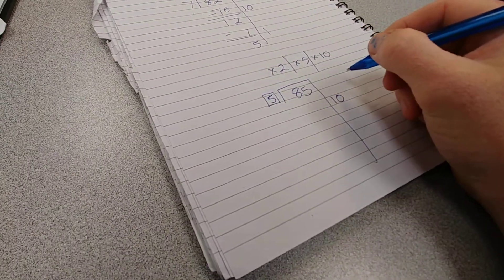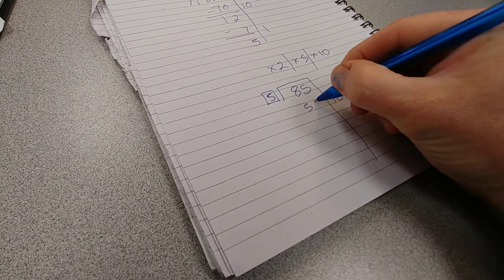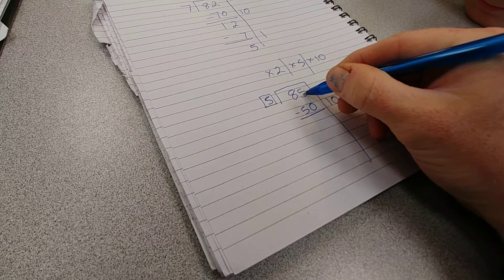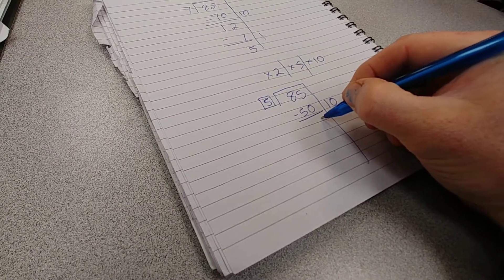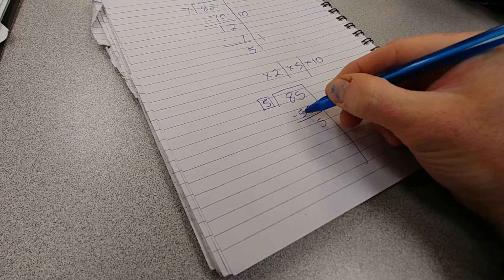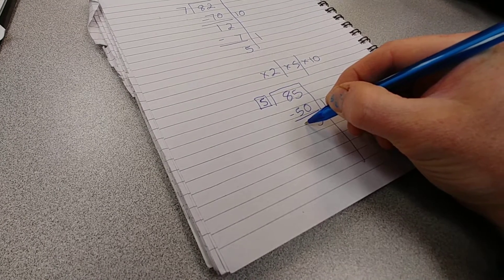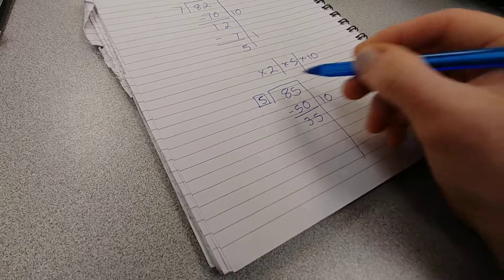What's five times ten? Fifty. Subtract it. Five minus zero is five, eight minus five is... no, it's not four, three. I want to put five into 35.